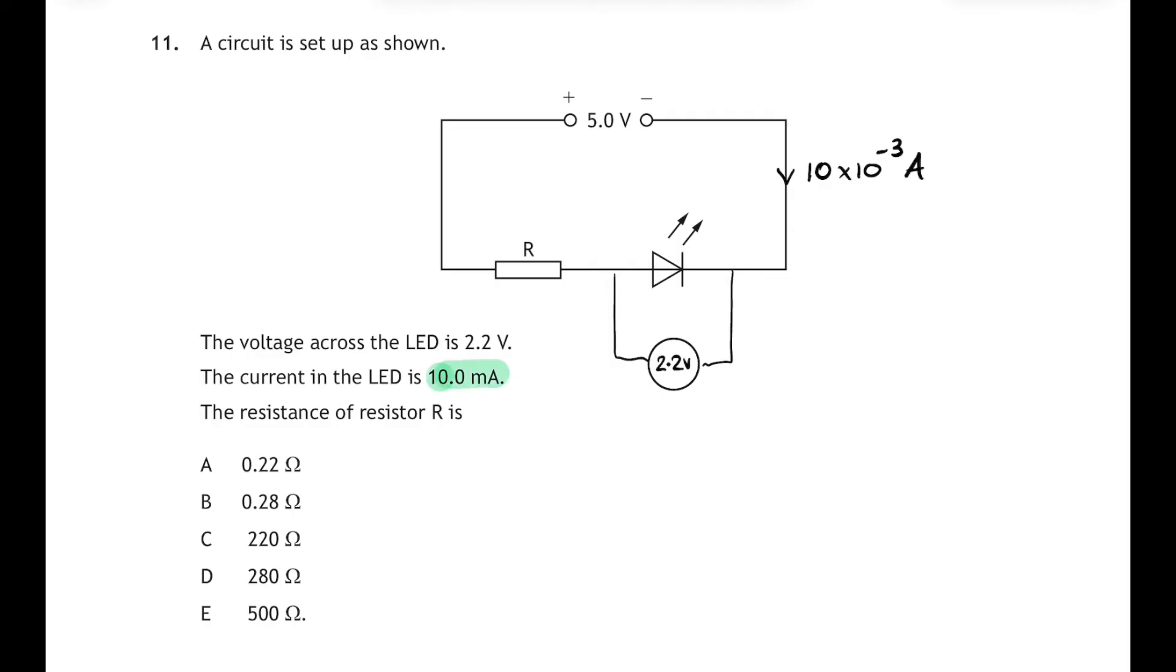And we have to work out the resistance of the resistor. So let's use Ohm's law here: R equals V over I. But what are we going to put in for V? Well, remember the resistor's job is to limit the current in the LED and also to share the power supply values that the LED only gets 2.2 volts. So the resistor has to take the remaining share of the 5-volt supply, so it'll be 5 minus 2.2 divided by the current 10 milliamps. That gives us 2.8 over 0.01, that is a resistance of 280 ohms. That's answer D.